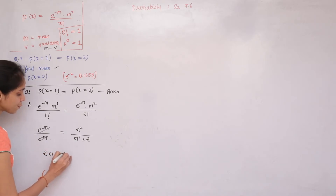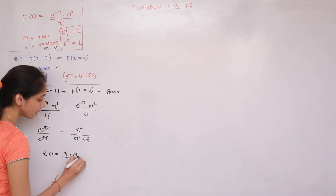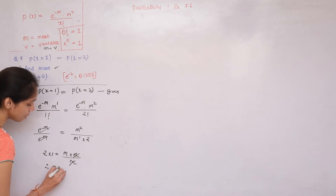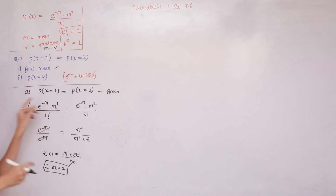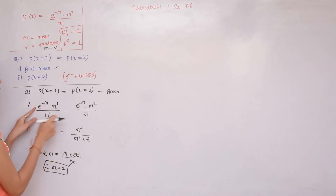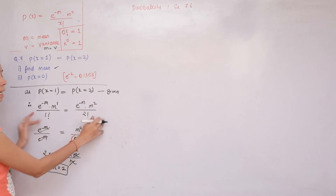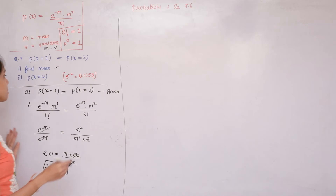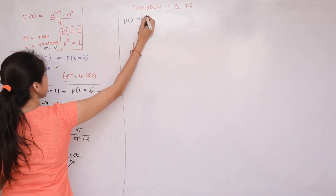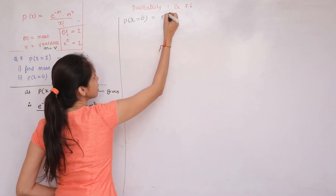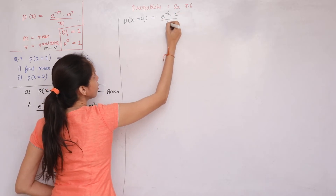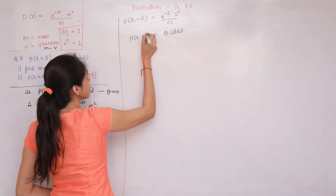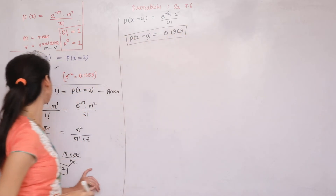Therefore m = 2. Since m = 2, e^(-m) = e^(-2). Now we can find P(X=0): P(X=0) = e^(-2) × 2^0 / 0! = e^(-2) × 1 / 1 = e^(-2) = 0.1353. That is the answer for question number 7.